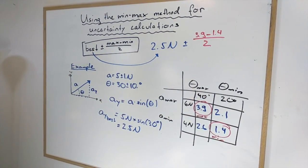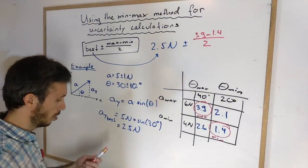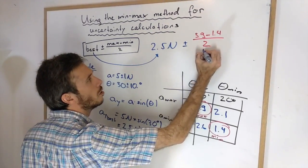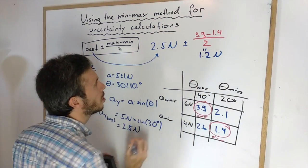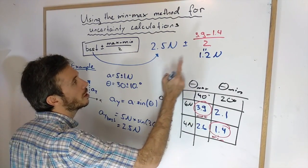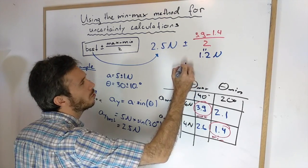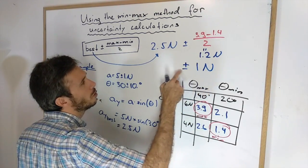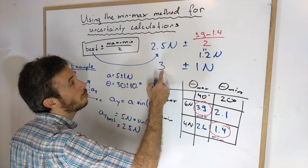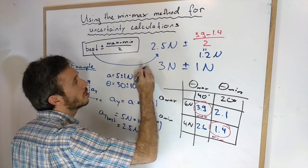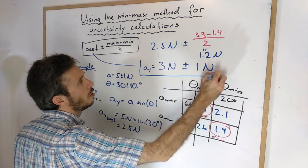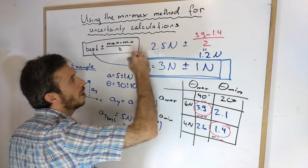Now if I calculate this this gave me 1.2 newtons. So as those of you that have watched many of my videos know, I like to round this to one significant figure. So I'm going to report this with one significant figure: 1 newton of uncertainty and my y component rounded so that I only have one estimated digit is 3 newtons plus minus 1 newton and this is my final answer.